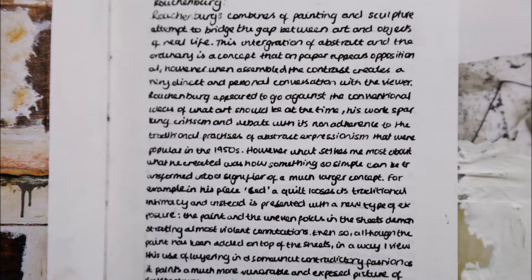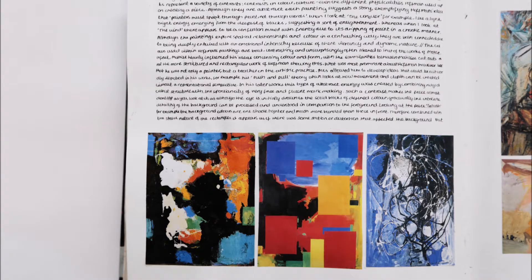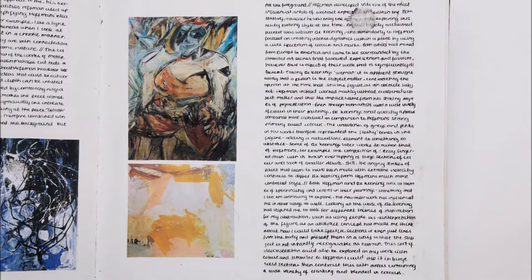Further reflection of ideas now incorporate Hoffman, de Kooning and even Matisse cutouts. De Kooning has inspired the candidate to look for different sources of inspiration for her abstractions, such as using people. His interpretation of the figure as an abstract concept has made her think about how she could take specific sections, or even just lines from the body, and present them in a way so that the subject is not instantly recognizable as human. This sort of deconstruction could also be explored in her work with colour, and similar to Hoffman, she could use it in large solid sections, then contrast this with areas containing a wide variety of clashing and blended colours.